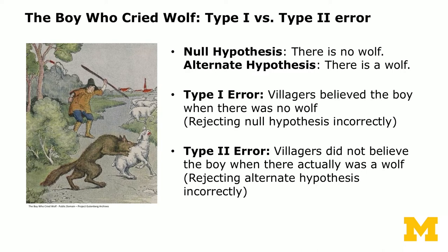Some days later, the wolf actually came, so the boy cried again. But the villagers thought the boy must be having some fun and it's just a joke, so they didn't rescue him — and this time it was real. We can draw the same analogy for type one and type two errors, framing the story in terms of the null and alternative hypothesis.